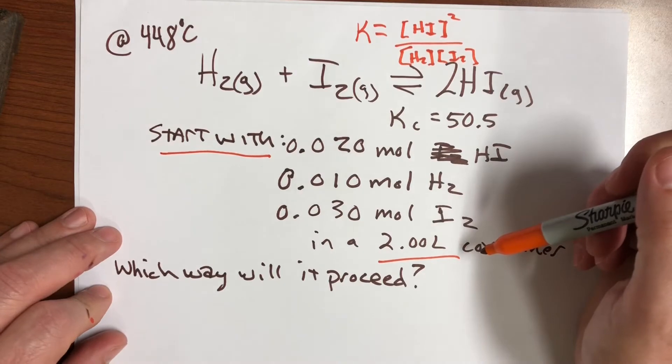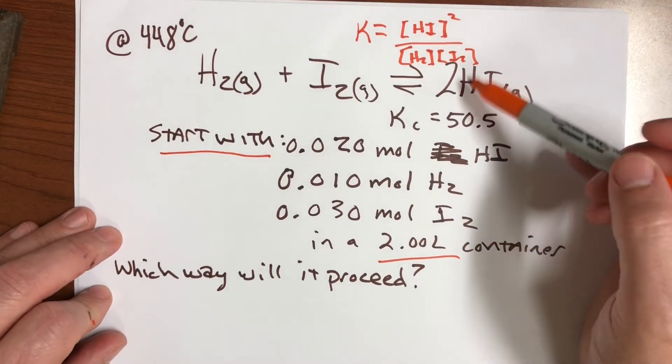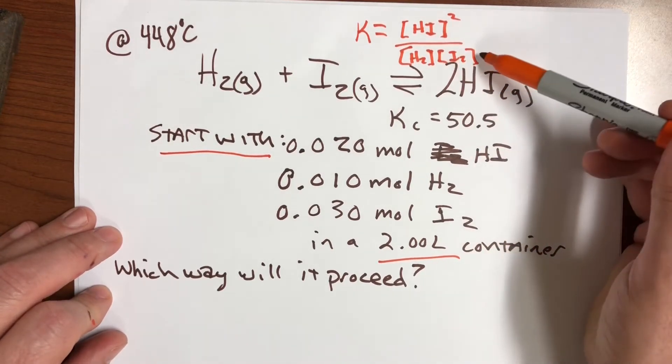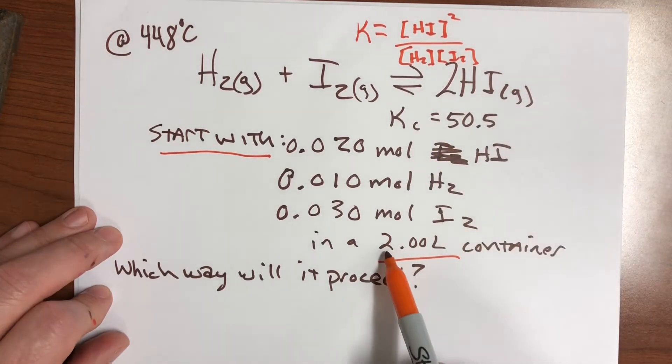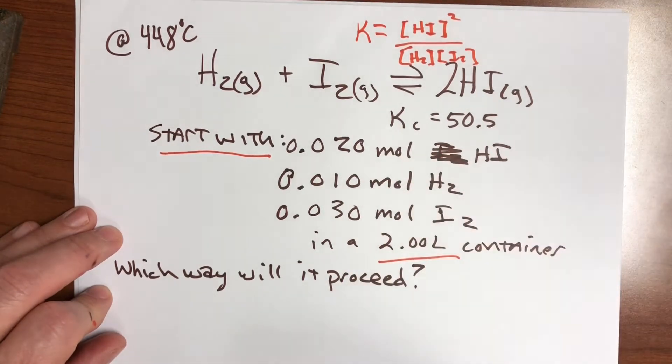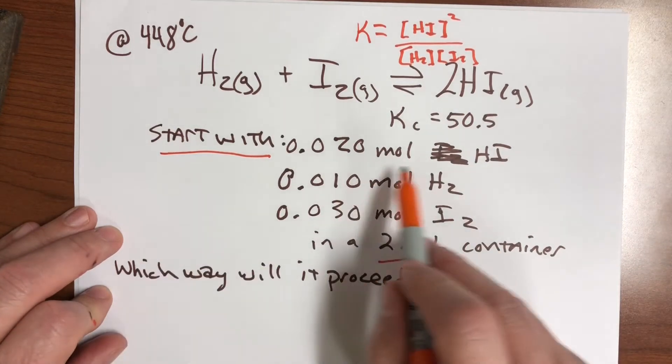You've got to be careful though, because we want to plug in molarities here. These are not molarities. These are moles. So as long as we have a one liter container, we can use them. Oh no, that's a two liter container. Oh, doggone it. So now we're going to have to do some really complicated math.